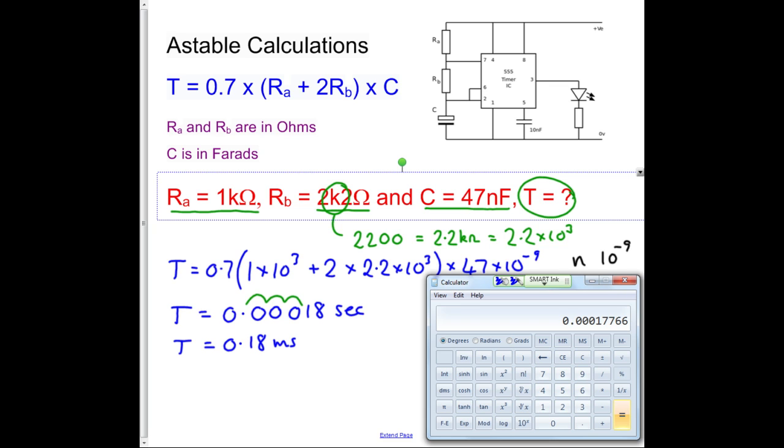Quite often when we're designing astables, we're more interested in frequency, so we should know that frequency is 1 over a time period, and therefore I can also write down that the frequency is this number. So we do the 1 over function, which is just above equals, just there.